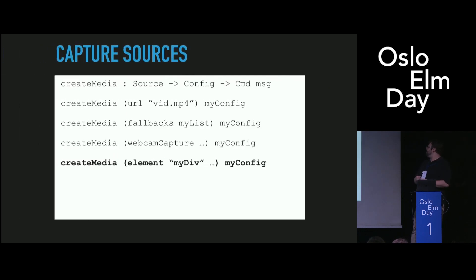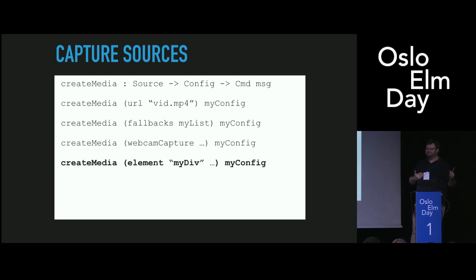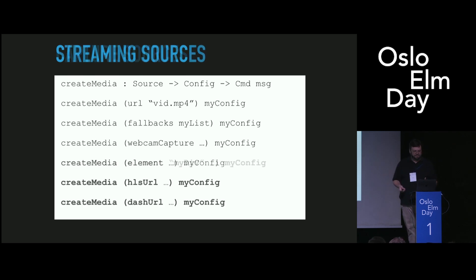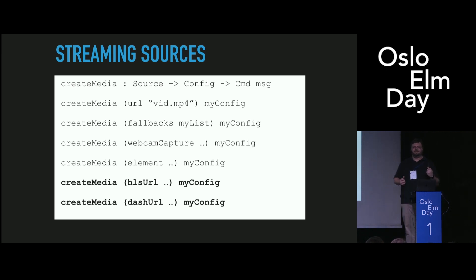But we're not limited to that. You can actually capture any element on your page with an ID — this is only in Chrome and Firefox. You can make a game or you can have an app, and you can capture a div. You can record it to file, you can stream it over WebRTC, you can do screen capture of your game. And you can add streaming sources like HLS and Dash, which is how YouTube and Netflix work — they do not work with regular MP4s, they work with streaming formats. Streaming formats are really hard to do in Elm right now because they require a lot of going back and forth to the DOM. I've been using hacks via custom elements — it's not great. But this approach makes it pretty trivial.